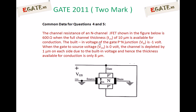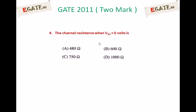Read the question again. The common data given: channel resistance of an n-channel JFET is 600 ohms when the full channel thickness of 10 µm is available for conduction. The built-in voltage is minus 1 volt. When VGS is 0, the channel is depleted by 1 µm on each side, so the thickness available for conduction is only 8 µm instead of the full 10 µm. You need to calculate the channel resistance when VGS equals 0.